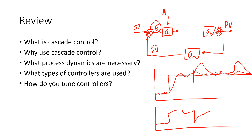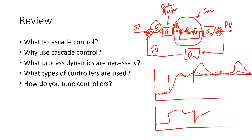We have this controller — we'll call this the master or the outer loop controller. That's going to provide a set point to the inner loop. Then I'm going to have another summing junction, and then a second controller. That's going to change the valve, and then I'm going to have something like a flow with a feedback there. So this is an inner loop right here, and that's when we have a cascade. We call it a cascade because the outer is giving a set point to the inner — we're cascading these set points down.